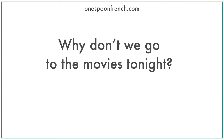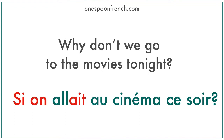The next sentence is: 'Why don't we go to the movies tonight?' — 'Si on allait au cinéma ce soir.' The word 'ce soir' means 'tonight' in English. And 'allait' is the third person imperfect verb form of the verb 'aller,' which means 'to go.'